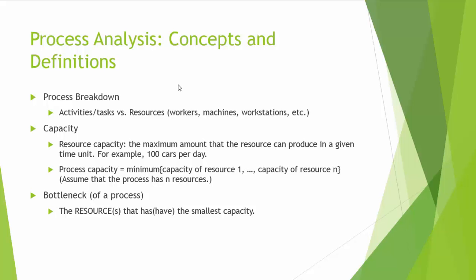A key concept in process analysis is capacity. There are two kinds of capacity. One is resource capacity, and the other is process capacity. Resource capacity is the maximum amount that the resource can produce in a given time unit. Process capacity is defined as the minimum of the capacities of all the resources in the process.